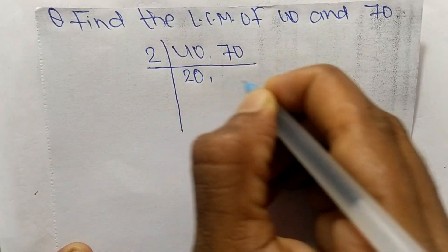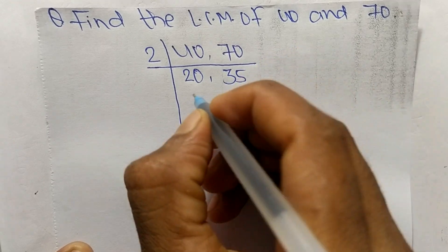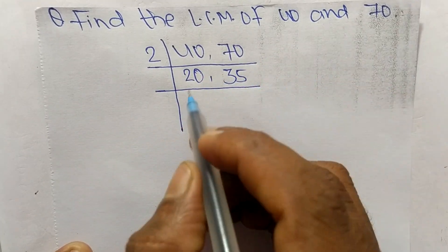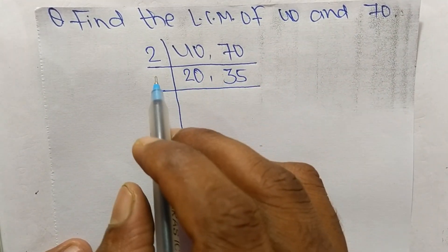2 times 20 equals 40, 2 times 35 equals 70. So now these both numbers are not exactly divisible by 2.